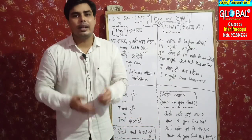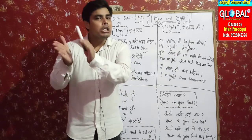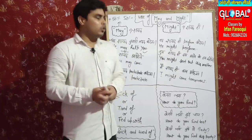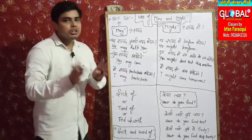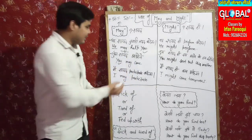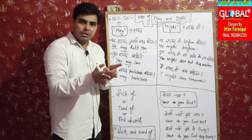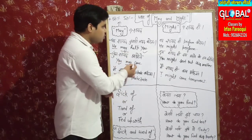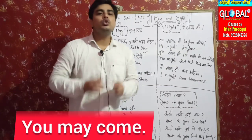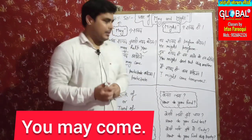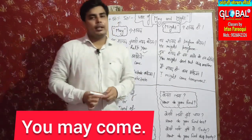Next sentence on the board: 'Tum shayad aaoge' — You will probably come. 'Tum' in English is 'you,' and since it's a possibility, we use 'may,' and the verb comes in its first form. So: 'You may come.'